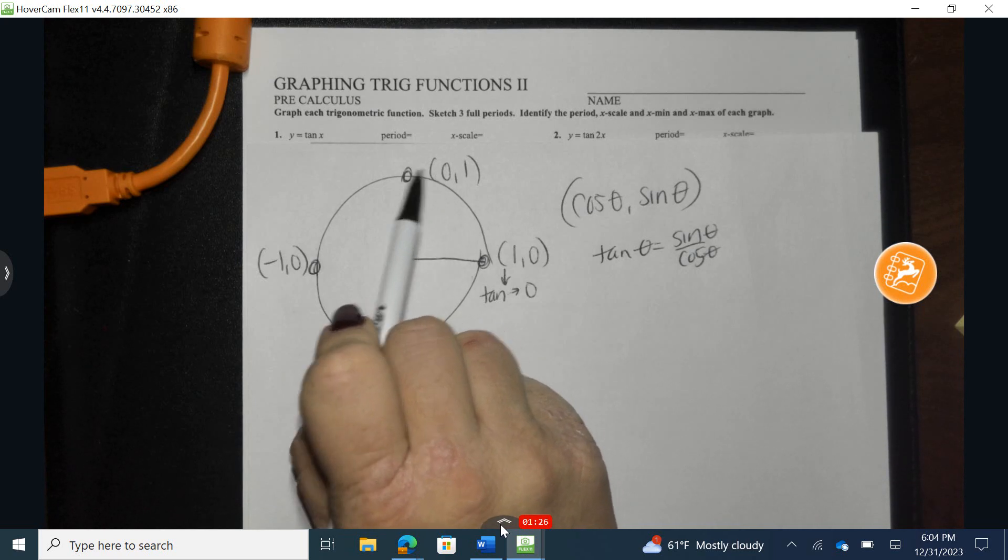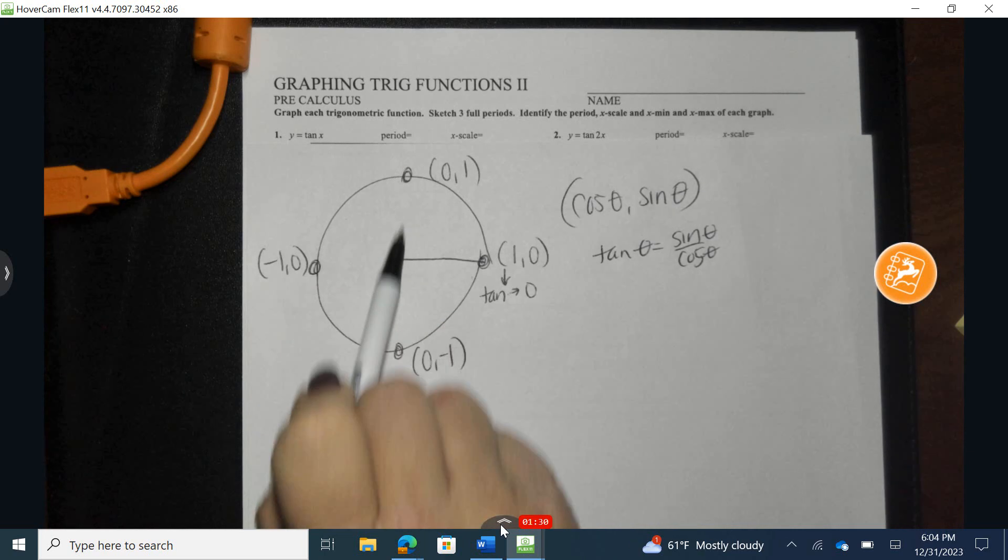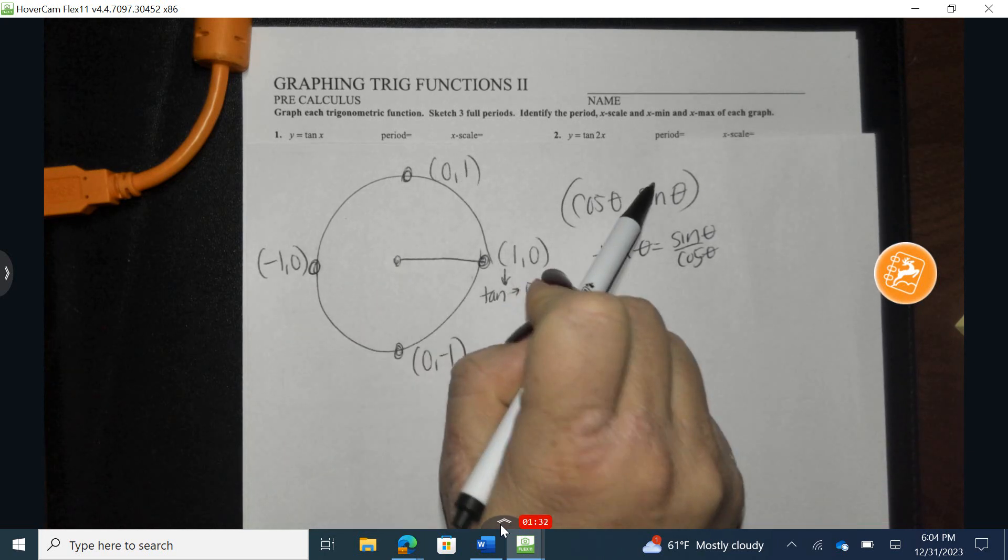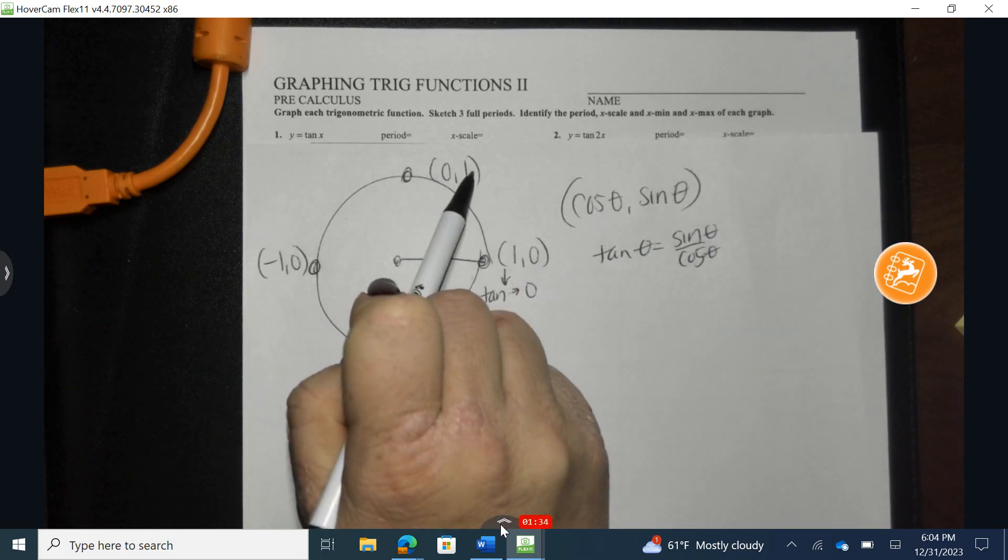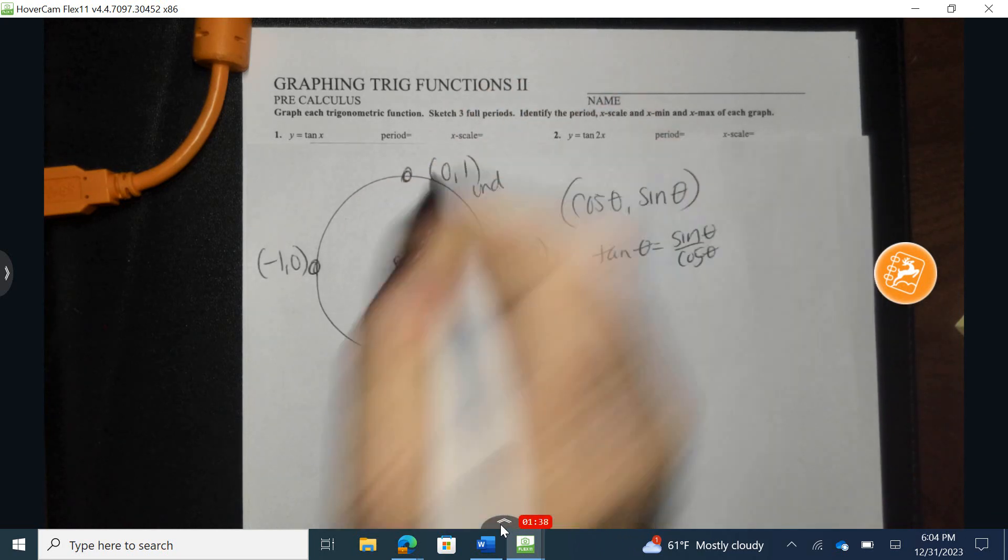Now, up here, 1 divided by 0 at 90 degrees, also known as pi over 2 as a radian measurement, the tangent sine over cosine would be 1 over 0. You can't divide by 0, so it would be undefined.